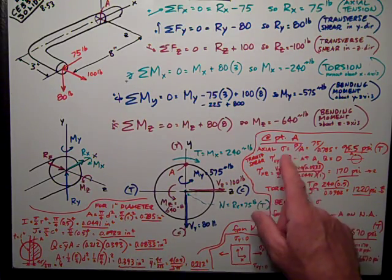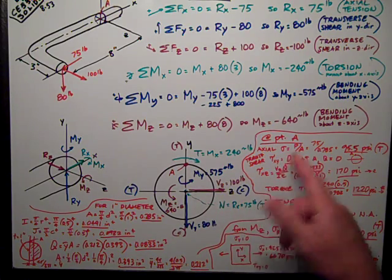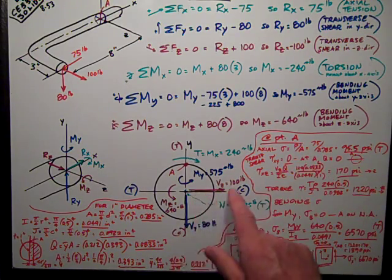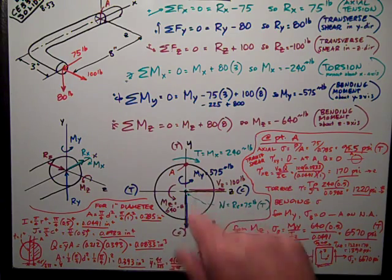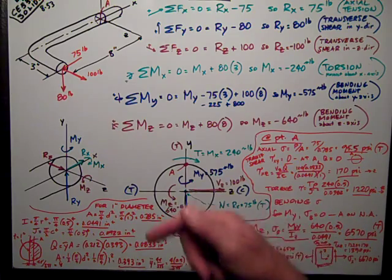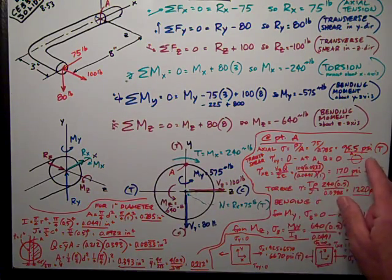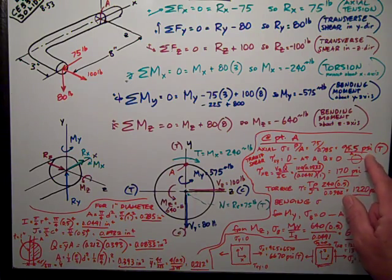Now I'm ready to compute my stresses. At point A, the axial stress is P over A. P is this longitudinal force, axial force in tension. P over A is just 95.5 psi in tension.